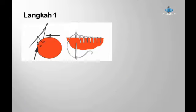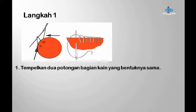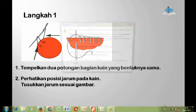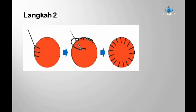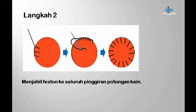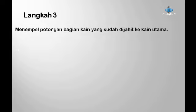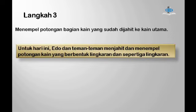Berikut langkah-langkahnya. Langkah pertama adalah menempelkan dua potongan bagian kain yang bentuknya sama, kemudian perhatikan posisi jarum pada kain dan tusukkan jarum sesuai gambar. Langkah kedua, menjahit feston ke seluruh pinggiran potongan kain. Langkah ketiga atau terakhir, menempel potongan bagian kain yang sudah dijahit ke kain utama. Edo dan teman-teman menjahit dan menempel potongan kain yang berbentuk lingkaran dan sepertiga lingkaran.